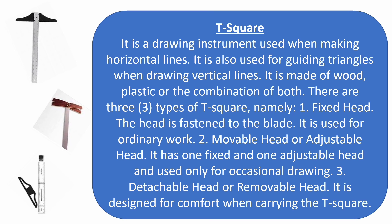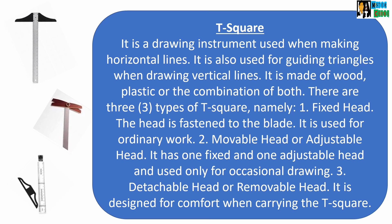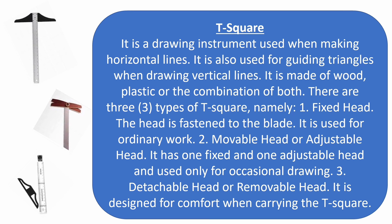T-square is a drawing instrument used when making horizontal lines. It is also used for guiding triangles when drawing vertical lines. It is made of wood, plastic, or a combination of both. There are three types of T-square: number one, fixed head — the head is fixed to the blade and is used for ordinary work; number two, movable or adjustable head — it has one fixed and one adjustable head and is used only for occasional drawing; and number three, detachable or removable head — it is designed for comfort when carrying the T-square.